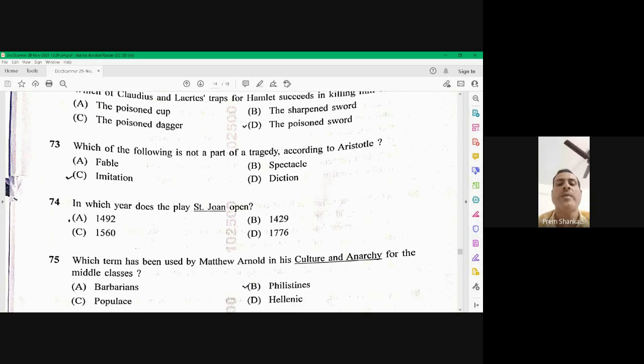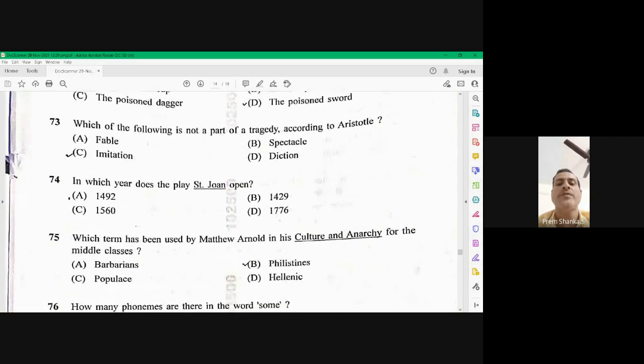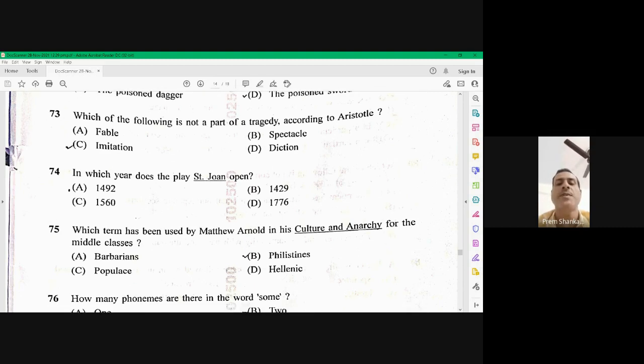Which term has been used by Matthew Arnold in his culture and anarchy for the middle classes. So he has used Philistines for as a middle class, barbarian as the aristocratic class or the top topmost class, populist as the lowest or working class. Philistines is the right option. 75 is B.